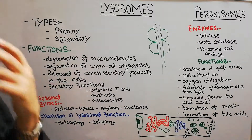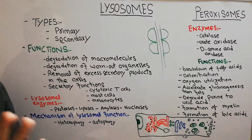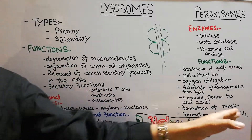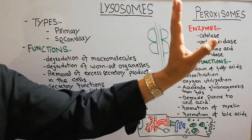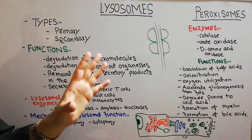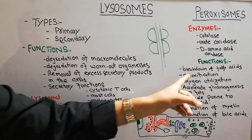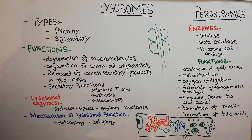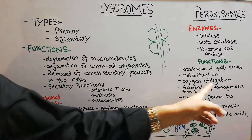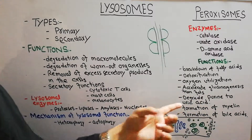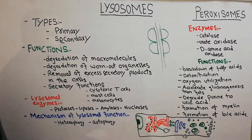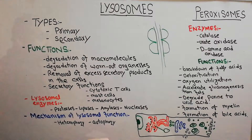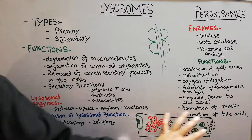Peroxisomes also help in the formation of bile acids. Bile is formed by the liver, stored in the gallbladder, and when we consume fats or lipids, they are digested through bile acid. This bile acid in the liver is formed by the peroxisomes. In summary, peroxisome functions include breakdown of fatty acids, detoxification of toxic substances, oxygen utilization, formation of glucose from fats, degradation of purines to uric acid, and formation of myelin and bile acids.